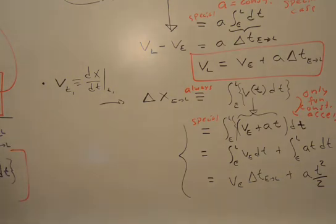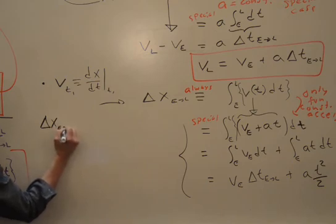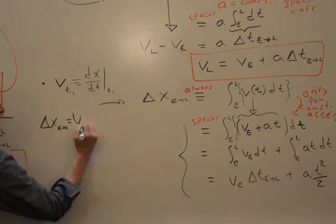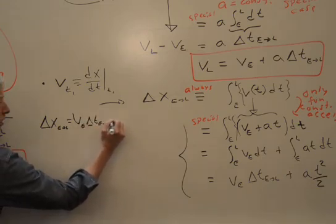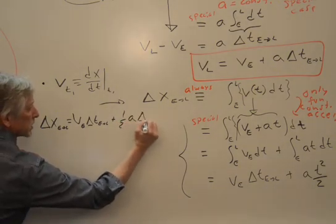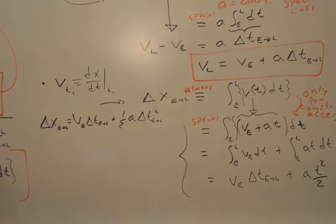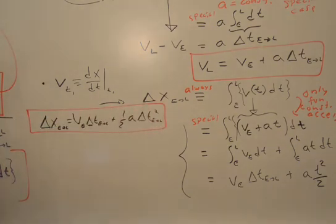So I've got this delta x between two particular states that are useful to you right now. V on the earlier state, the time between those states, plus 1 half the constant acceleration, times the time between those states, squared. Let's box it, wrap it up, check the units. They're all in meters or any unit of length that you have. And we've got it.